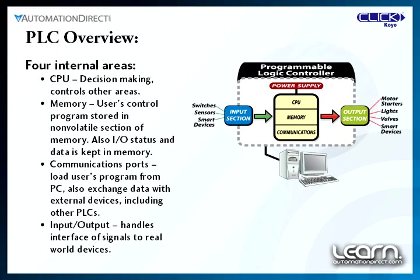We can envision how a PLC functions by examining the interaction of four internal areas. The primary area is the CPU, or central processing unit — this is the brain, or where the decision making takes place. The second area is the memory. This is where the CPU stores the user's control program, IO status, and data. The program is stored in non-volatile memory so it is not lost in the event of a power failure.